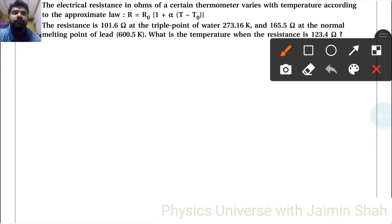First of all, let's use the given values of resistance. 165.5 equals R₀, where R₀ is given as 101.6, which is the resistance at the triple point of water. This is the reference resistance.